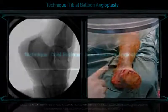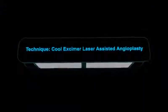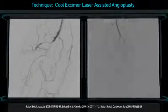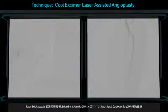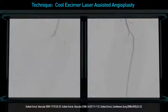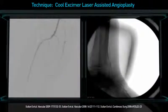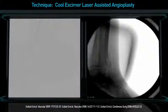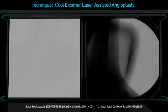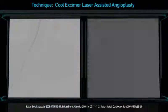Slow laser catheter advancement at a rate of 0.5 mm per second is required to maximally ablate the target tissue, with saline infusion and multiple passes. Any attempt to rapidly advance the laser catheter defies the principles governing laser-induced plaque debulking and causes dilation rather than vaporising the plaque.